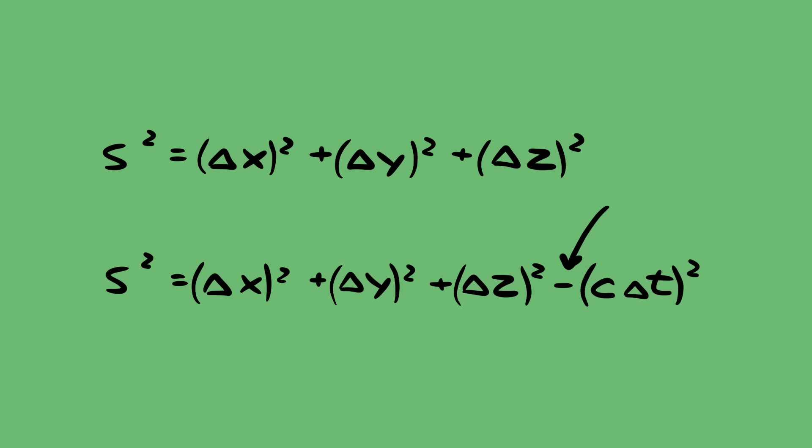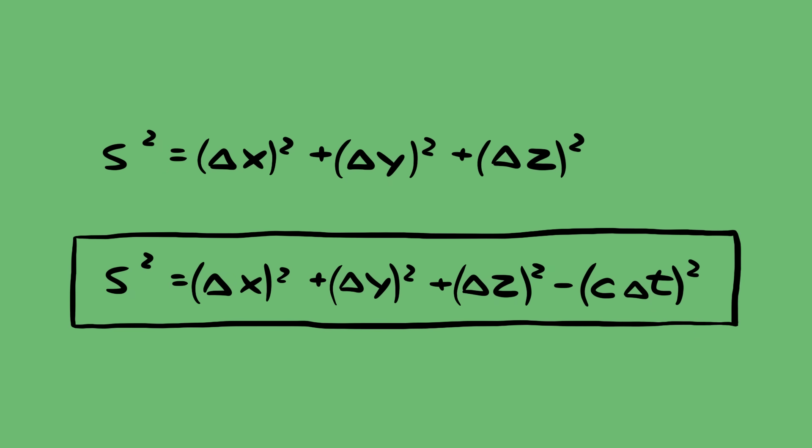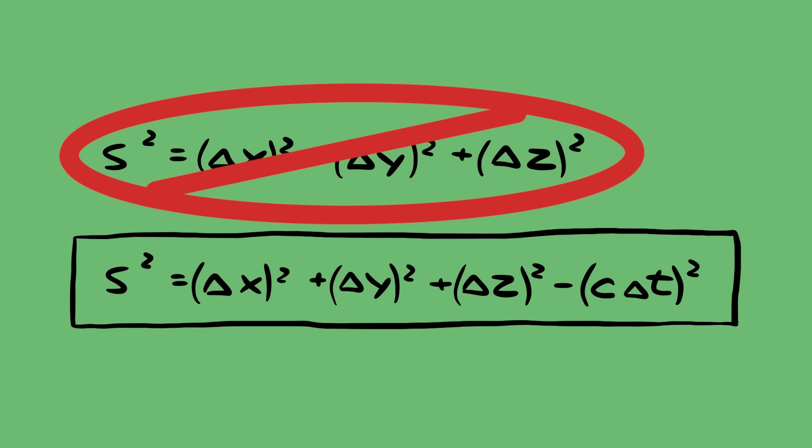This negative sign sounds really arbitrary, but remember I didn't pick this, and neither did Minkowski or Lorentz or Einstein. If you just assume that the speed of light is the same for all observers, then when you do the math, it turns out that this value, rather than this, stays the same in any reference frame.